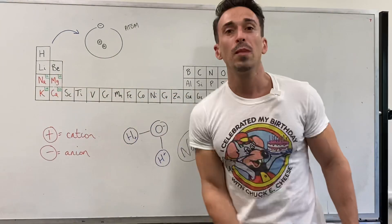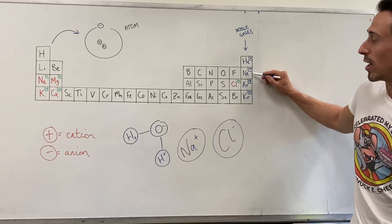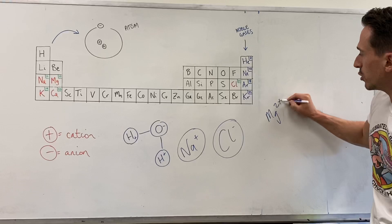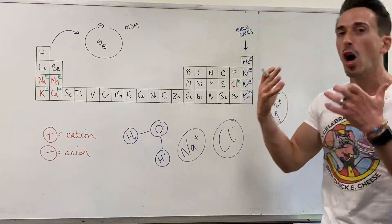Magnesium, Mg, 12 electrons, wants to be like neon, its closest noble gas. It needs to lose two electrons. So you end up getting Mg2+. And these are the different ions.